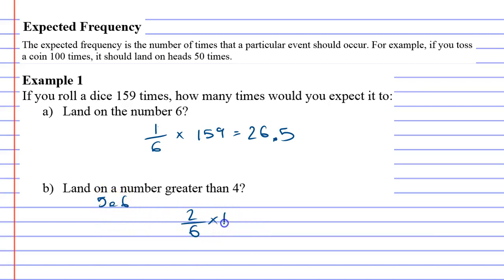We multiply that probability by 159, the number of times the dice was rolled. 2 over 6 times 159 comes out to 53 times. So we'd expect to get a number greater than 4 about 53 times out of 159 rolls.